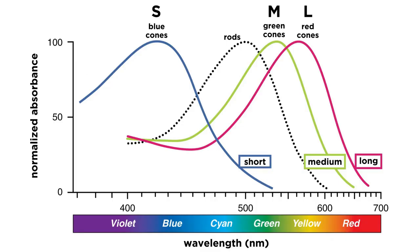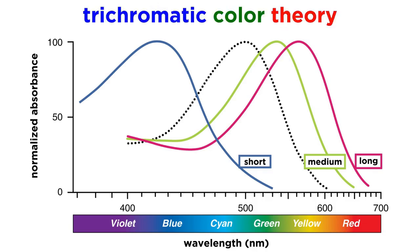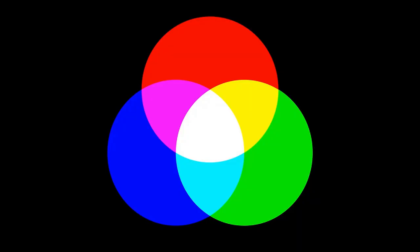To get even more specific with cones, there are three cone types: red, green, and blue — also called L, M, and S, which stand for long, medium, and short wavelength. Trichromatic color theory explains how differential activation of these three types is responsible for our perception of all colors. This is why a computer monitor can use only red, green, and blue pixels to represent any color.